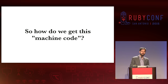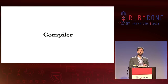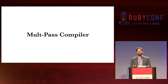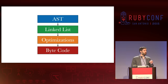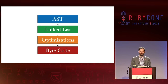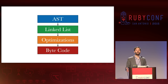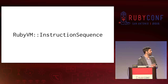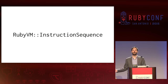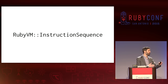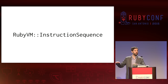So how do we get this machine code? We get the machine code through Ruby's compiler, and Ruby's compiler is actually a multi-pass compiler. We're going to look at the different steps the compiler makes. We have an AST which goes to a linked list. We perform optimizations on the linked list and we end up with bytecode coming out at the end, and we execute that bytecode in the virtual machine. We can access that bytecode through a class called RubyVM::InstructionSequence, which is available in your Ruby today.